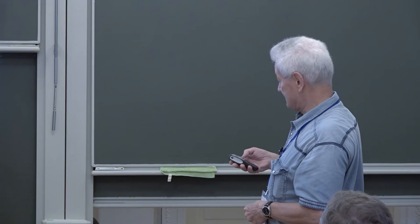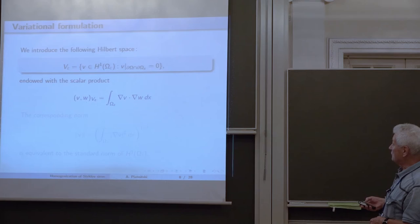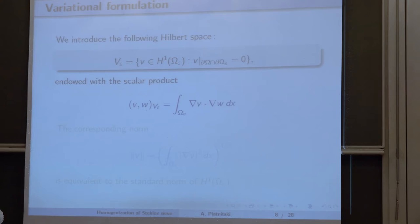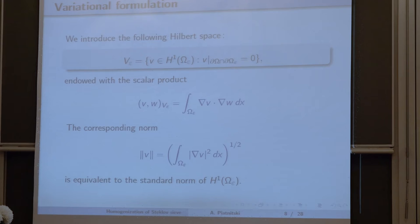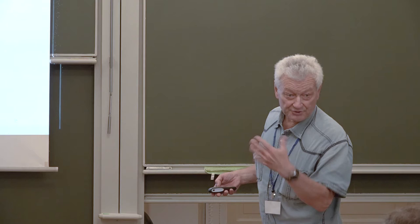The first space is the space of H1 functions equal to zero at the exterior boundary, since we impose homogeneous Dirichlet condition there. We introduce an inner product which is uniformly in epsilon equivalent to the standard H1 norm — this equivalence is uniform in epsilon and easy to check by the trace theorem and extension theorem.